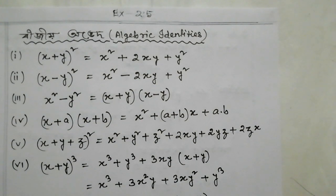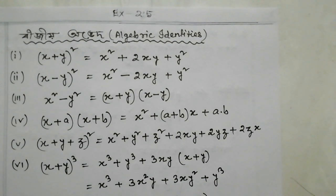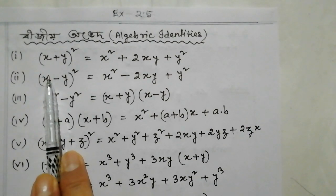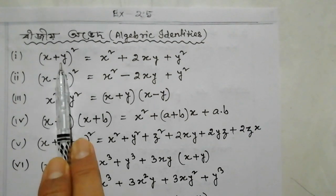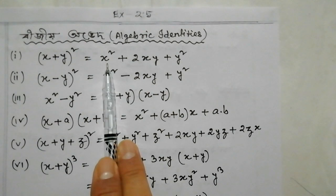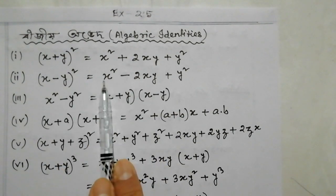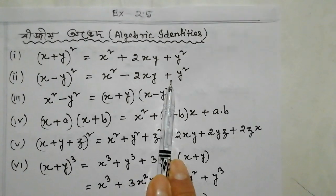I will write this formula for now. I think the formula is very much important. I will be able to tell you that the formula is more important. x plus y whole square equals x square plus twice xy plus y square. x minus y whole square equals x square minus twice xy plus y square.